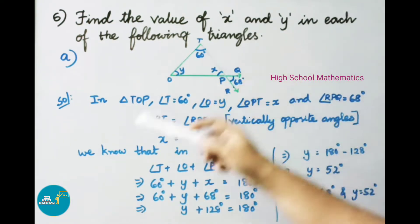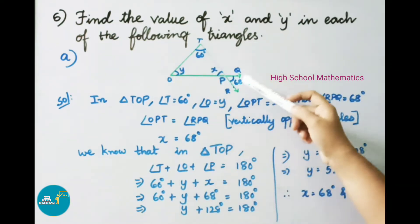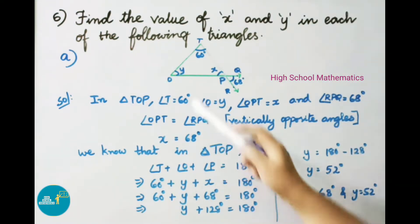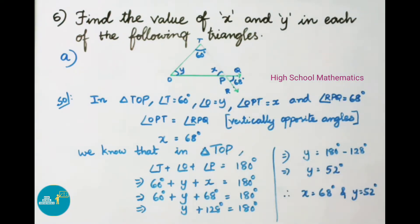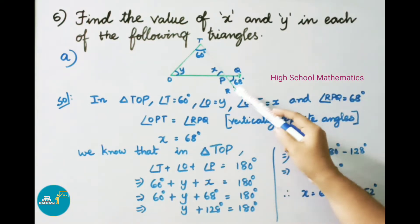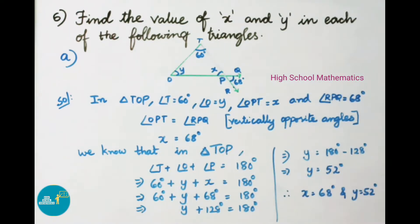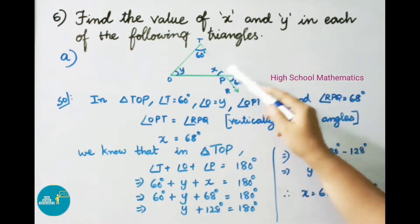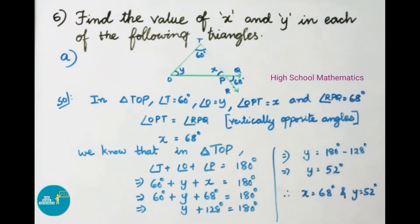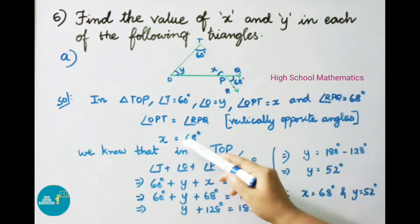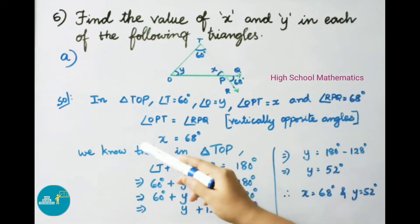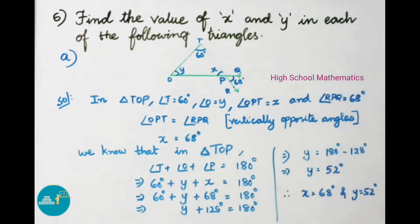In triangle TOP, angle T equals 60 degrees, angle O equals y, angle OPT equals x, and angle RPQ equals 68 degrees. From the figure, angle OPT and angle RPQ are vertically opposite angles, therefore angle OPT equals angle RPQ, so x equals 68 degrees.